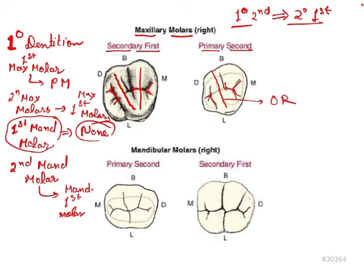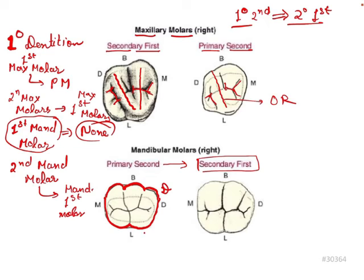Now for the mandibular molars: the primary second mandibular molar resembles the permanent mandibular first molar. Looking at the primary second mandibular molar, we can identify three cusps on one side and a fourth and fifth cusp — specifically the mesiobuccal cusp, distobuccal cusp, distal cusp, distolingual cusp, and mesiolingual cusp. The same five cusps can be appreciated on the permanent mandibular first molar in exactly the same arrangement.